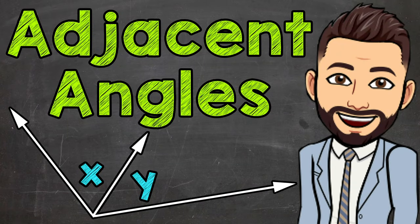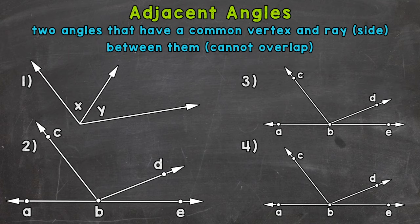Welcome to Math with Mr. J. In this video, I'm going to cover adjacent angles. Adjacent angles are two angles that have a common vertex and ray, or side, between them, and they cannot overlap. We're going to go through four examples in order to better understand adjacent angles.